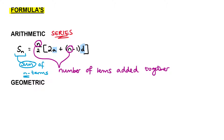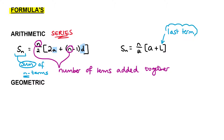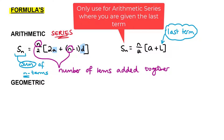The next formula is Sn equals n over 2 times (a plus l), where l represents the last term. This is the formula you will use if you are given the last term in any arithmetic series.